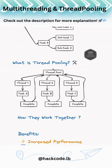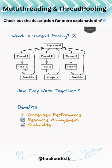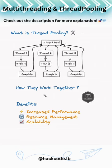Thread pooling is like having a team of workers ready to tackle tasks. Instead of creating new threads every time you need one, you have a pool of reusable threads. This saves time and resources, making your programs more efficient — basically like hiring a team of chefs to cook dinner instead of one person doing everything. As shown in the diagram, each thread is assigned a particular task, and once the task is complete, the thread is returned to the pool to be reused for other tasks.